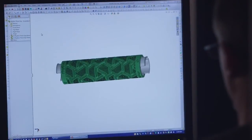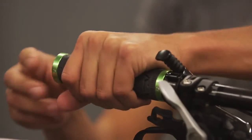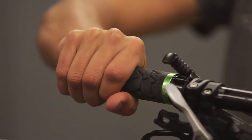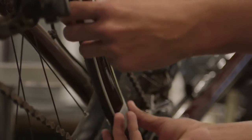With the Connex 3, we can better duplicate the material properties of some of the things we're making. It's important for our prototype parts to look and feel like production parts in order to make the best bikes.